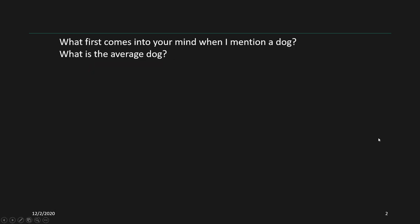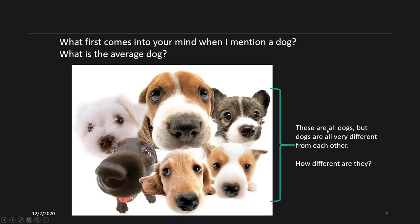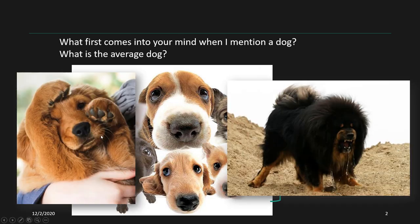As a thought experiment, what first comes into your mind when I mention a dog? Think about what is the average or the typical dog. You might have something like this in your mind — these are all dogs, but they're all very different from each other. The spectrum of dog covers everything from a golden retriever puppy to a Tibetan Mastiff. There's a huge variability when it comes to dogs.